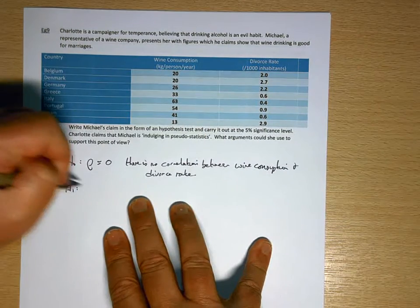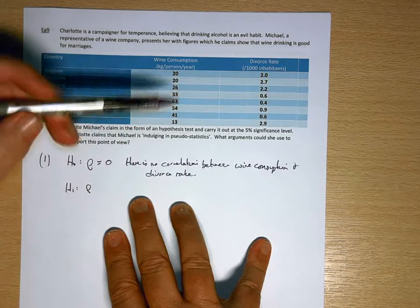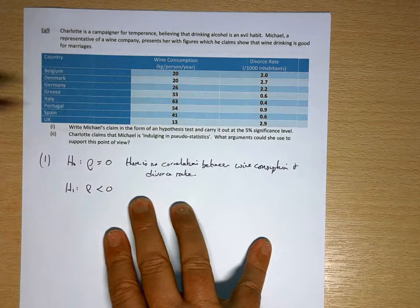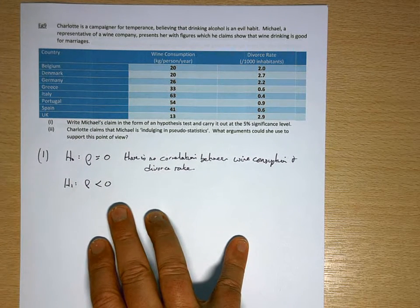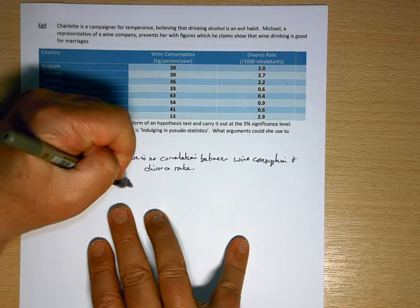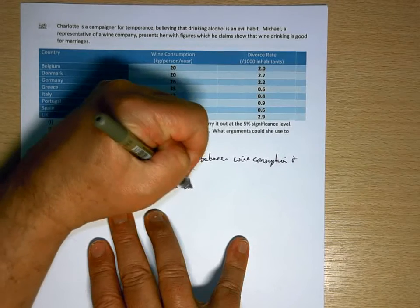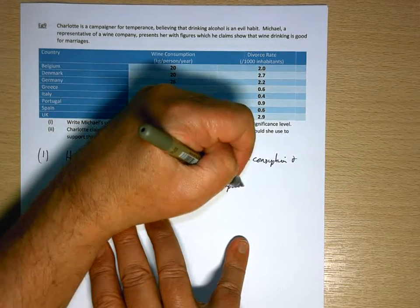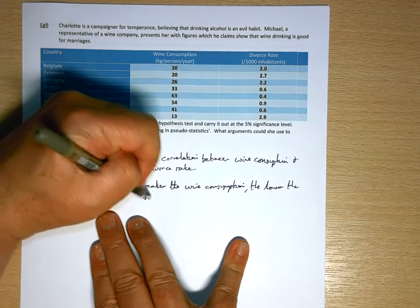And then what Michael is claiming is that the more you drink, the lower the divorce rate. So he's looking for a negative correlation. So the parent population will have a negative correlation coefficient. The greater the wine consumption, the lower the divorce rate.